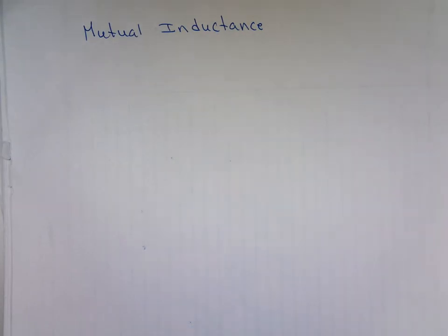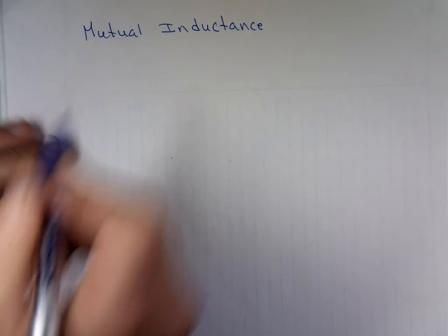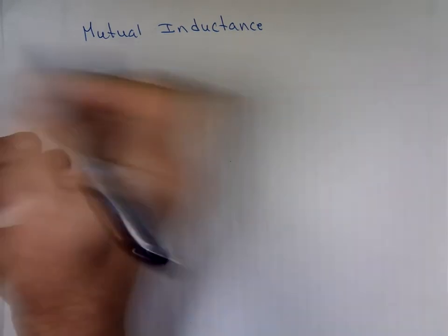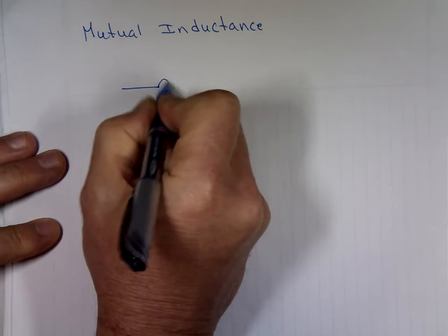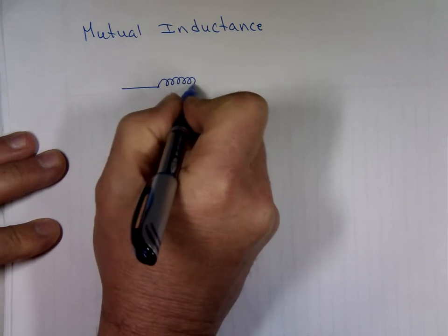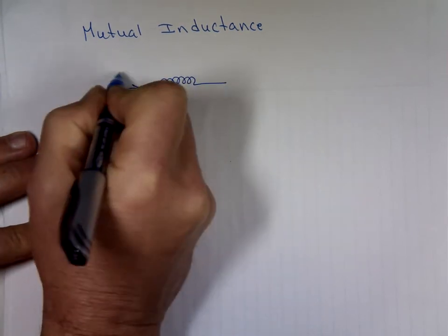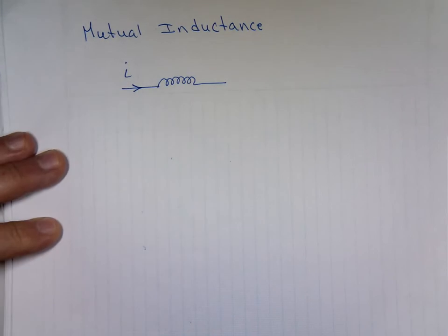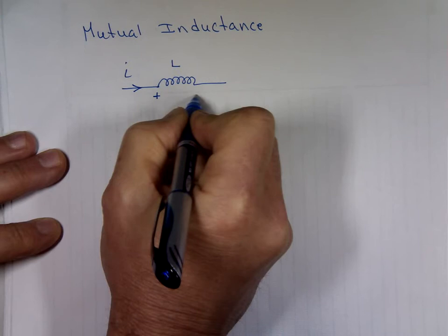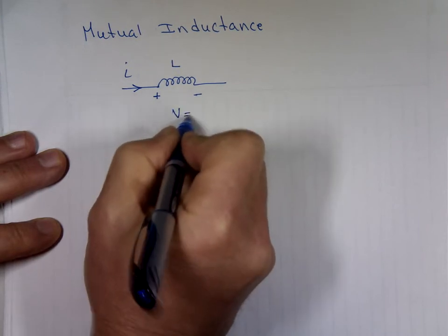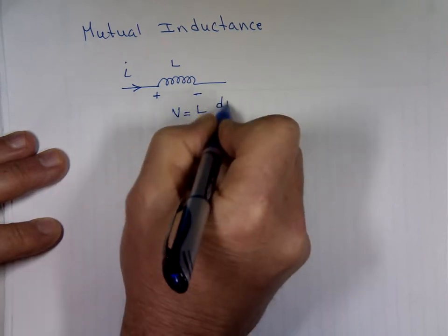Let's talk about mutual inductance — that's the next chapter in our book. If you remember from Circuit 1 and the beginning of Circuit 2, we said if you have an inductor with current I going through it, this is L, it's going to be a voltage drop — plus to minus — V equals L di/dt.